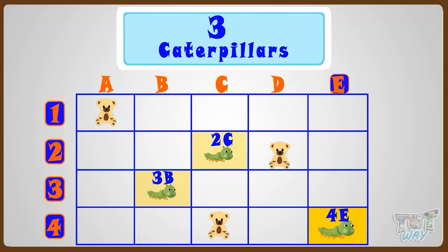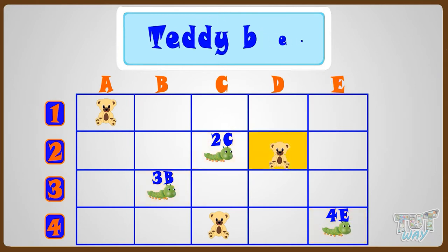Now let's name the location of this teddy bear. It is at second row and D column. So its location is 2D.